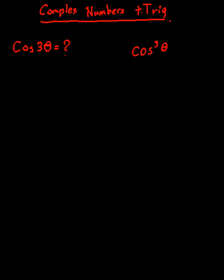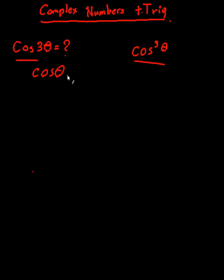In this video, I'm going to be talking about complex numbers and trigonometry. There are some interesting properties in complex numbers which make it easier for us to analyze things like cos 3θ, or basically any power. I'm going to do this in terms of an example. The first example is: what is cos 3θ in terms of cos θ and sin θ? The second example is: what is cos³θ in terms of cos 3θ and cos θ?